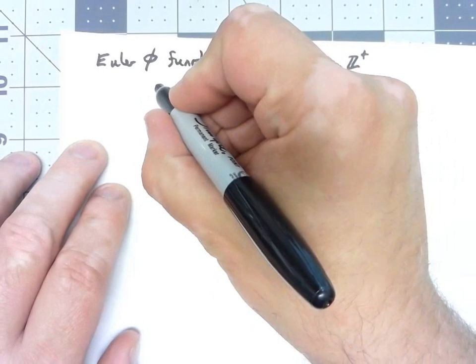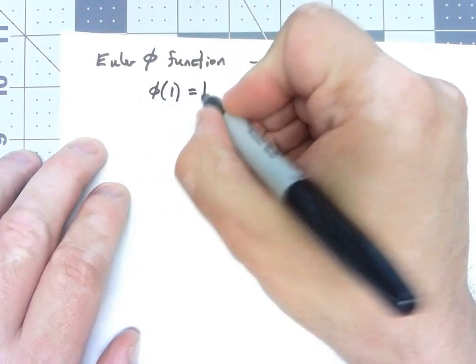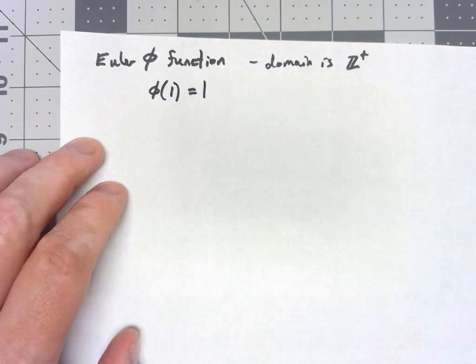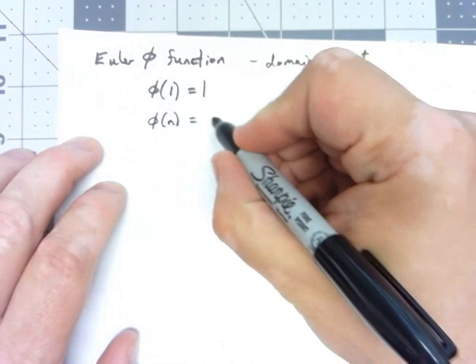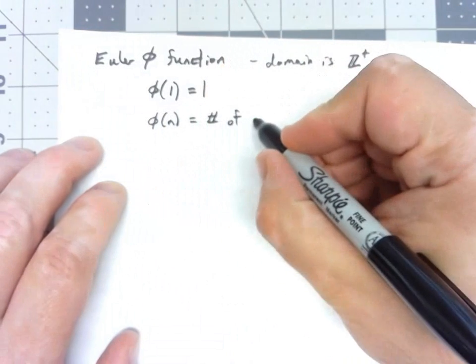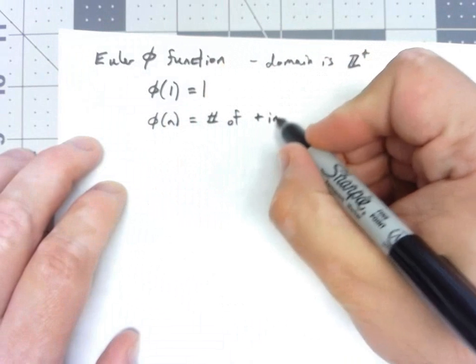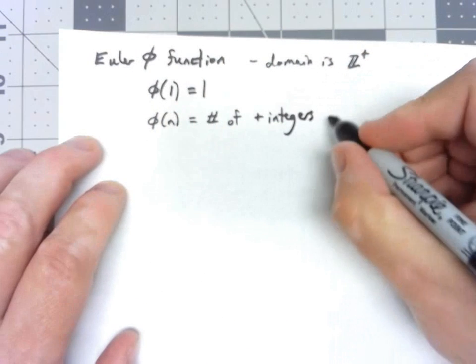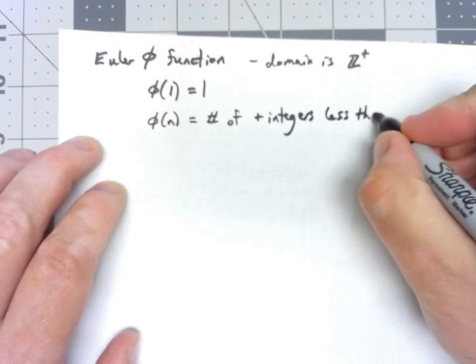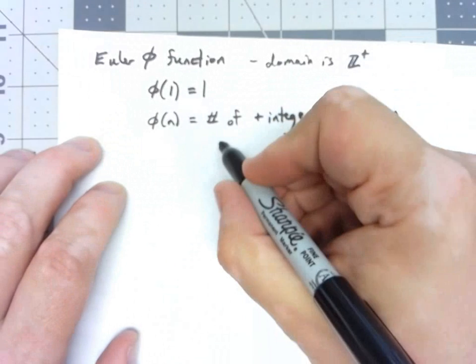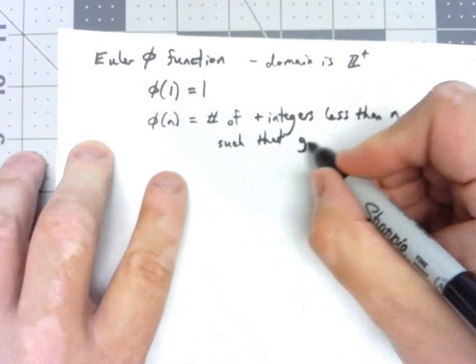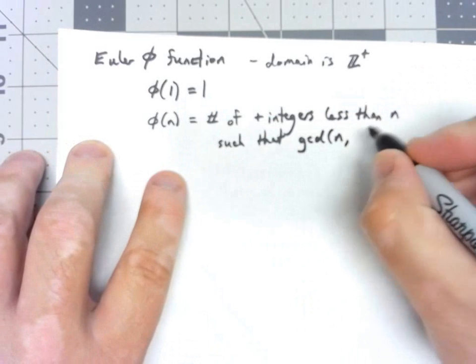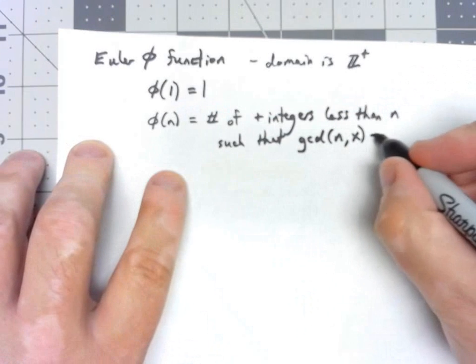We're going to start and just say that φ(1) we're just going to define that to be 1. But for any other positive integer, φ(n) is equal to the number of positive integers less than n such that they're relatively prime to n, such that the GCD of n and whatever number we pick is equal to 1.